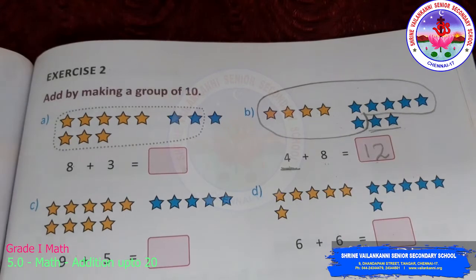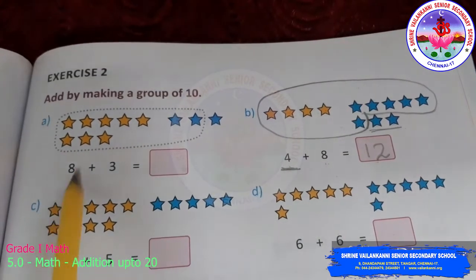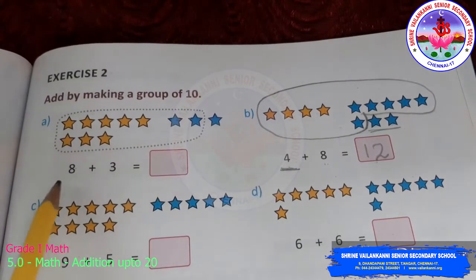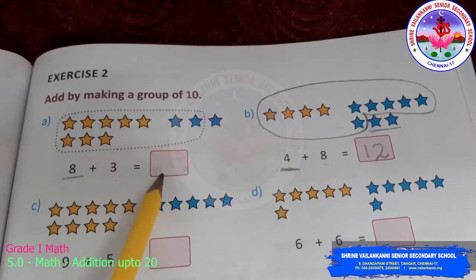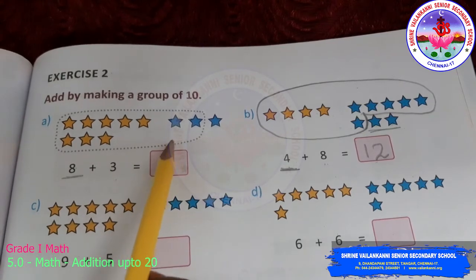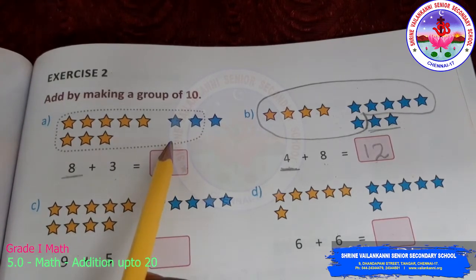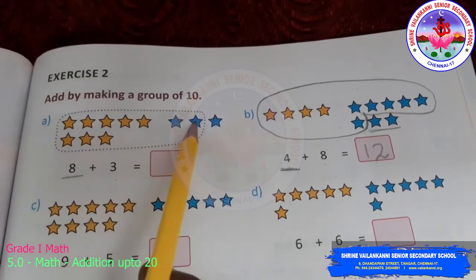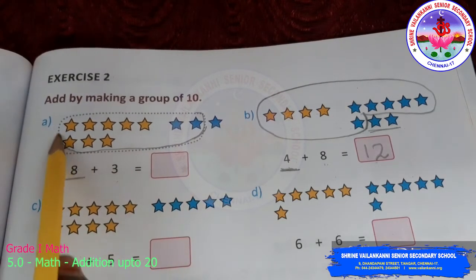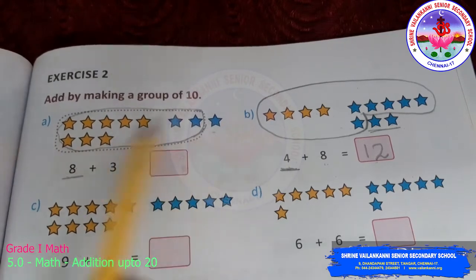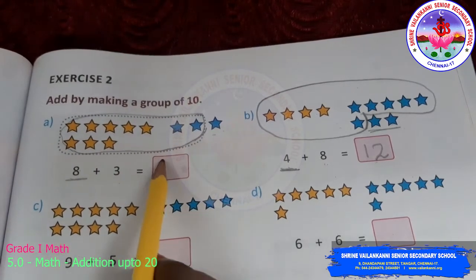Now, we will do exercise 2. See, 8 plus 3. There are 8 stars and 3 stars. We have to make this as 10 and count the extras and get the answer. So, 8. How many more do you need to make it a 10? After 8, 9, 10. So, you need 2 more. So, you take 2 from this number and you make it a 10. Then add the extras. So, 10 plus 1 is 11.